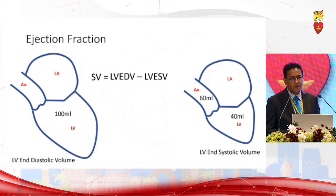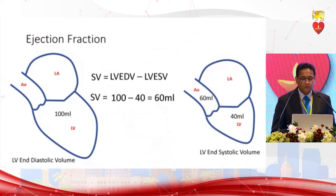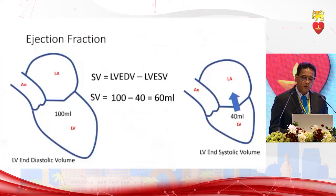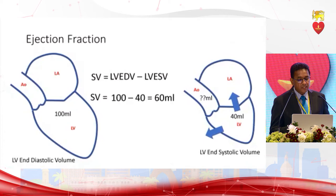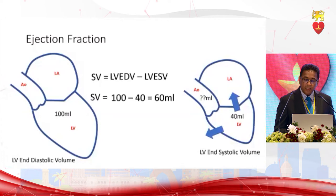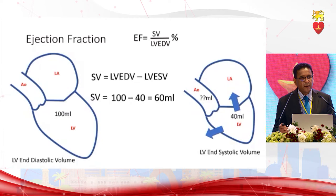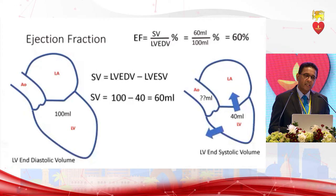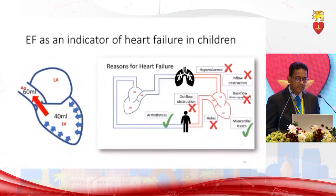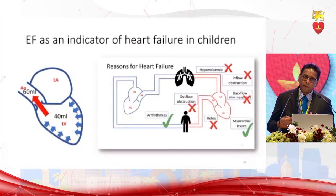In a patient with mitral regurgitation or VSD, is that full stroke volume going into the aorta? No — part goes back to the LA in mitral regurgitation, and part goes through the VSD. So ejection fraction does not give a representative view of real cardiac output. It is reliable only in myocardial issues and arrhythmias, not in the other conditions. You cannot rely on ejection fraction.